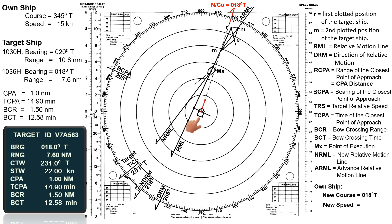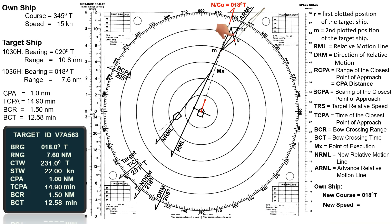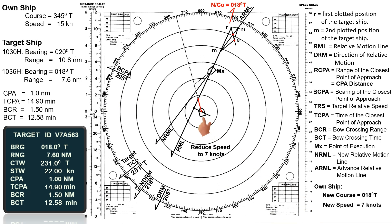When the target reaches a distance of five nautical miles at point Mx, own ship should alter course to 018 degrees true to achieve a two nautical mile passing distance. In cases where own ship cannot alter course due to limited navigable waters or an existing obstruction, she can maintain her present course but must reduce her speed. Using a compass divider to measure the distance from E to the intersection point, the new speed is seven knots — a two nautical mile passing distance can still be achieved if own ship reduces speed to seven knots when the target is at five nautical miles.